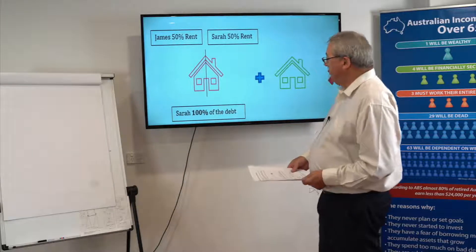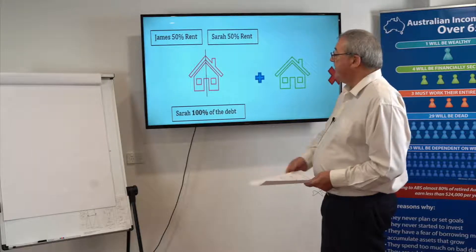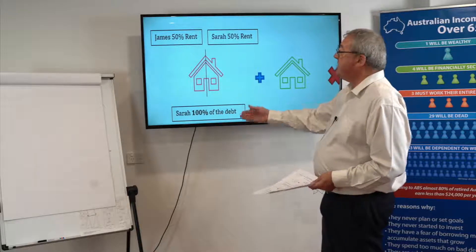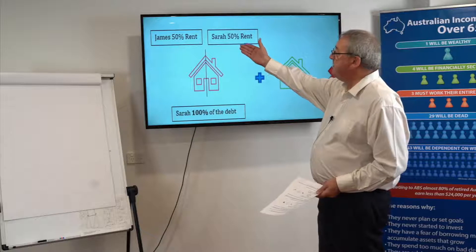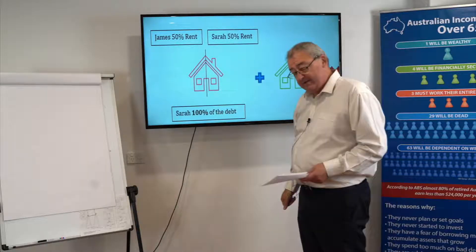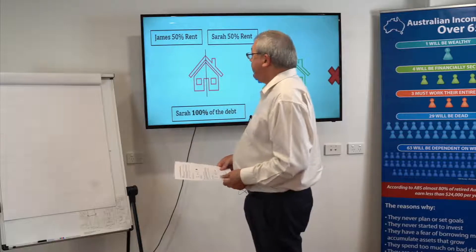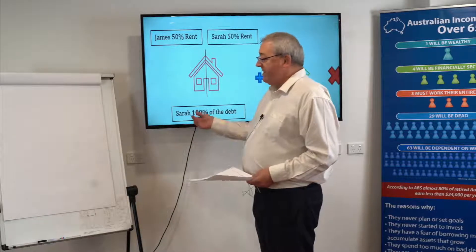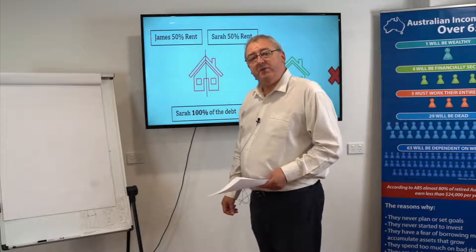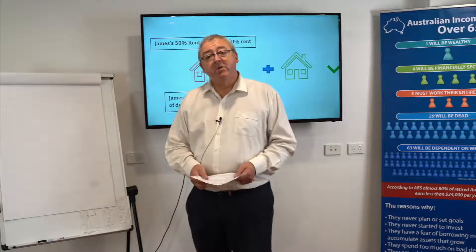This is the problem: Sarah has a hundred percent of the debt, as does James, but for investment purposes they only receive 50% of the rent. Even though James is contributing, lenders say that Sarah is a hundred percent responsible. So what's the solution?